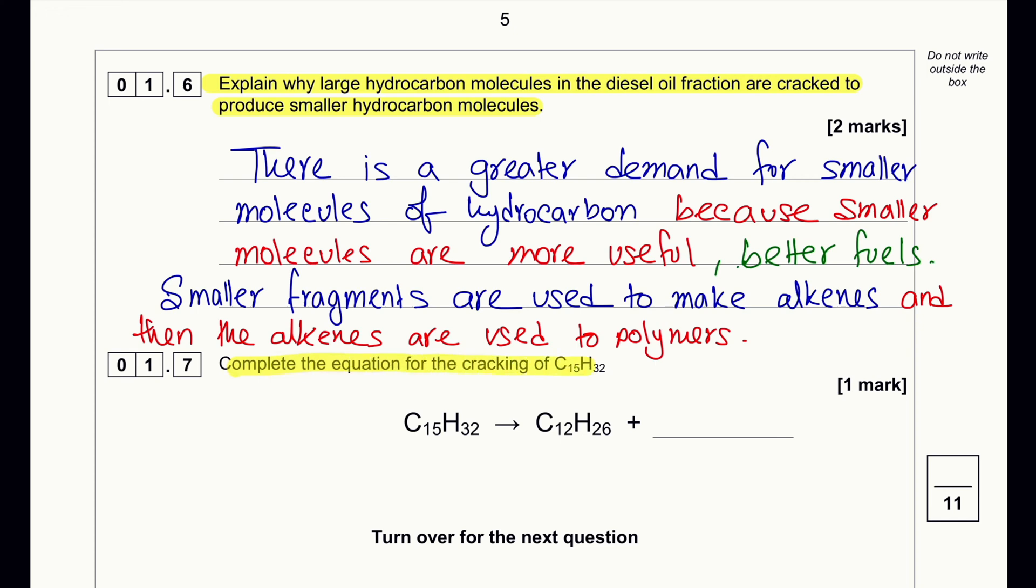Complete the equation for the cracking of C15H32. We can already see one of the fractions. The fraction is C12. So the other fraction will be C3. Then we need to count the number of hydrogens. So 32 hydrogens were in the original molecule. Let me subtract 26. 6 hydrogens.